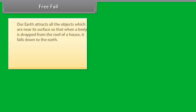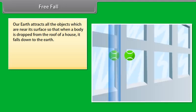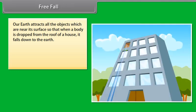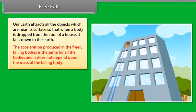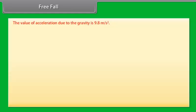Free fall: the earth attracts all objects near its surface, so when a body is dropped from the roof of a house it falls down to the earth. The acceleration produced in freely falling bodies is the same for all bodies and does not depend upon the mass of the falling body. This uniform acceleration produced in a freely falling body due to the gravitational pull of the earth is called acceleration due to gravity, and its value is 9.8 m/s².